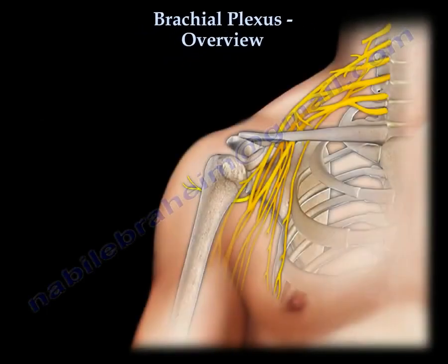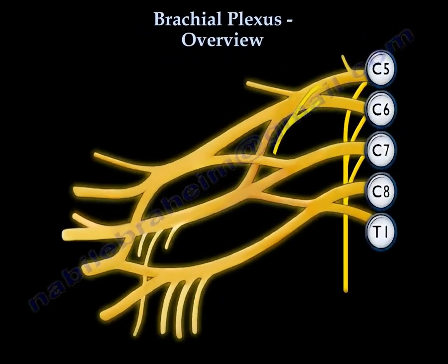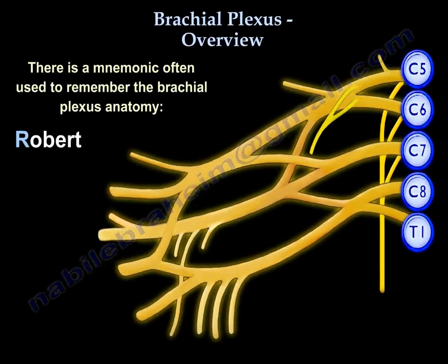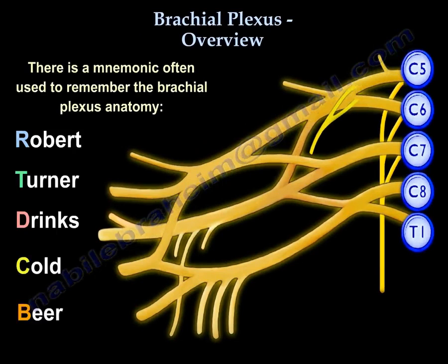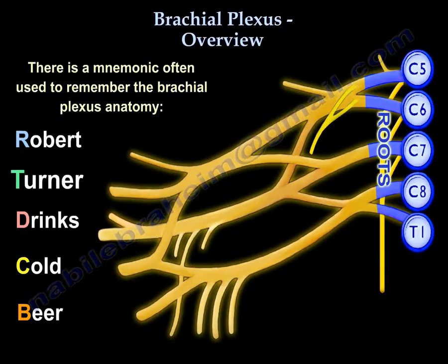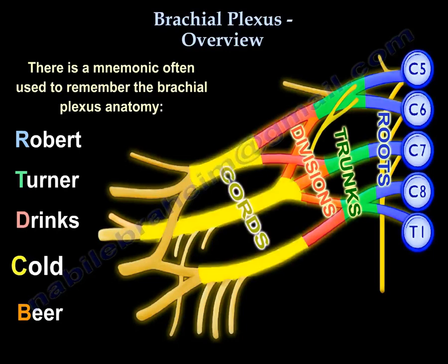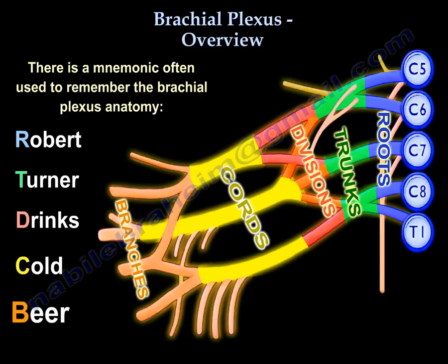Brachial plexus anatomy is a very difficult task. I'm going to try to make it easy for all of us. People Robert Turner drinks cold beer: Robert is the roots, Turner is the trunks, drinks is the divisions, cold is the cord, and beer is the branches.